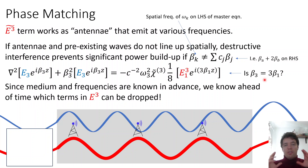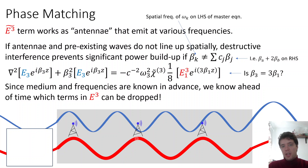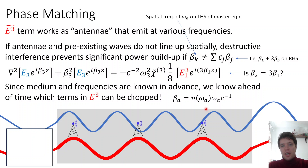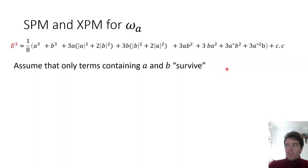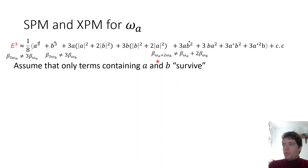Because we as experimentalists choose the nonlinear medium and the input frequencies, we can ensure beforehand that particular terms in the E-cubed expansion will be negligible — because the spatial frequency of any wave depends on the refractive index and the launched frequency, both of which we control. For example, we can ensure that the spatial frequency at 3 omega A differs from 3 times the spatial frequency at omega A, and similarly for the term at omega A plus 2 omega B.